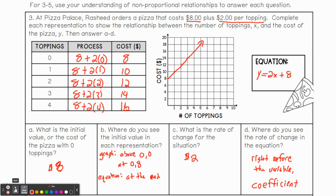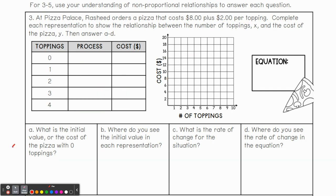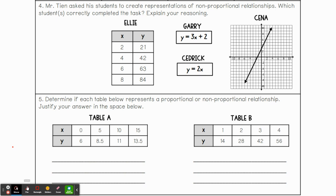All right. Let's take a look at number four. Number four says, Mr. Tien asked his students to create representations of non-proportional relationships, which student correctly completed the task. So I kind of hinted at this earlier, I said, we can use the Y over X idea, but it's not going to work when it's not proportional. So if there is no constant, it is non-proportional. So, and we're looking for which ones are non-proportional. So we're looking at Ellie's first.